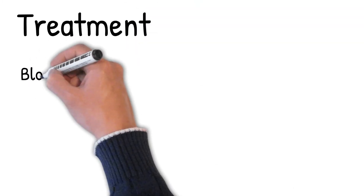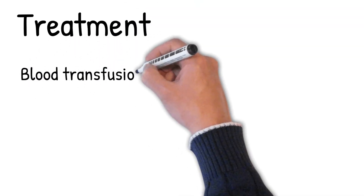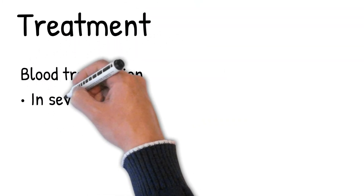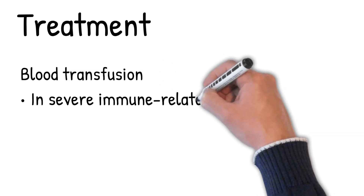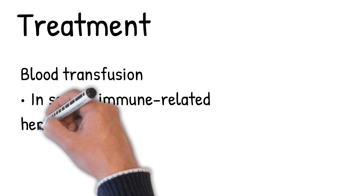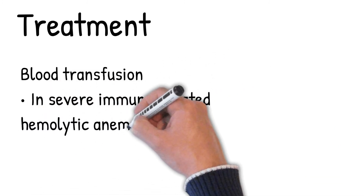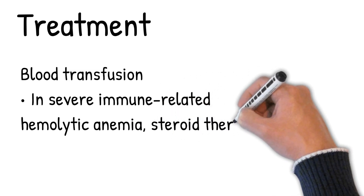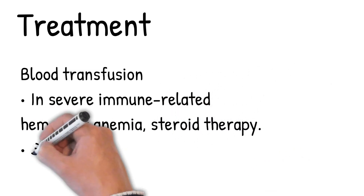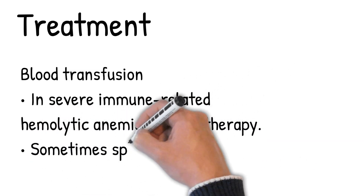Treatment depends on the cause. Symptomatic treatment can be given by blood transfusion if there is marked anemia. In severe immune-related hemolytic anemia, steroid therapy may be used. Sometimes splenectomy can be helpful in cases of extravascular hemolysis or hereditary spherocytosis.